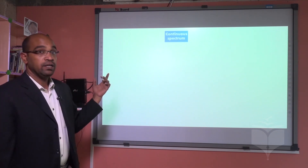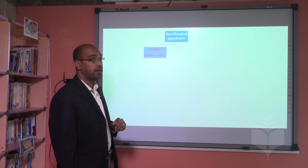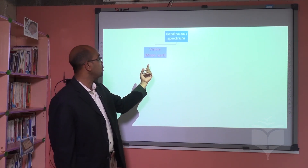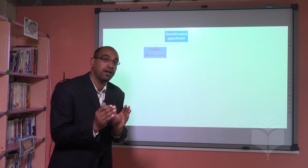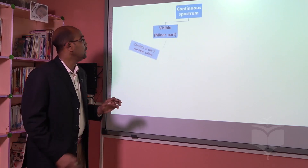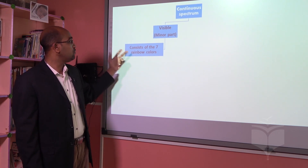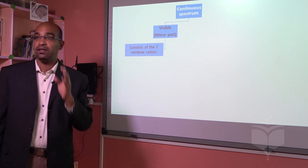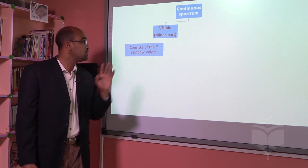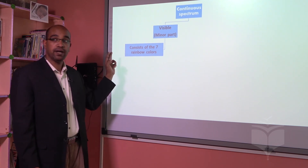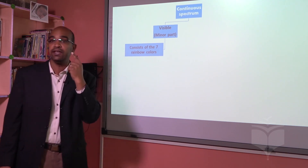The continuous spectrum has two parts. First is the visible part, which we call the minor part because it is a small portion of the whole spectrum. This contains the seven colors of the rainbow, starting with red and finishing with violet. So we have seven colors — red through violet — all called visible light, which is the light we can see as colors.